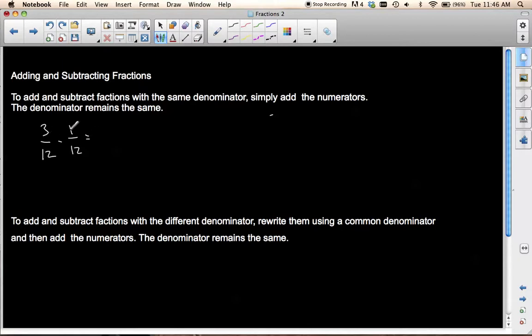Well, I just go, alright, well, 3 minus 1 is 2, and 12 stays the same. And now I just need to reduce. If I divide both by 2, I end up with 1 over 6.